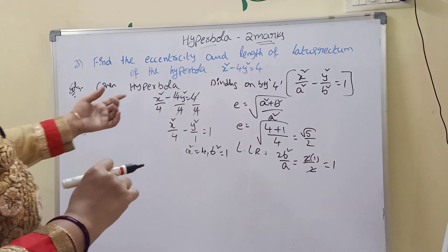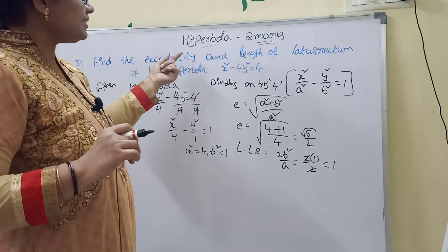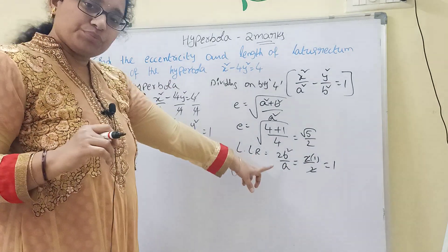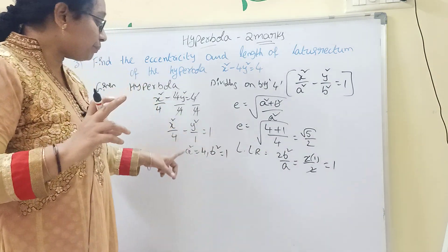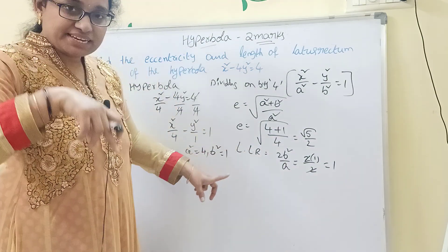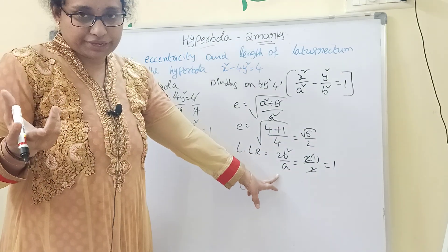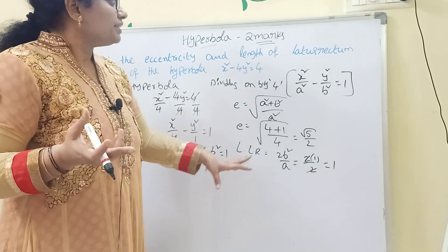For any hyperbola given, convert to general form and find eccentricity and length of latus rectum. The formula is 2b²/a when a is greater than b. If a is less than b, the formula becomes 2a²/b. Use the appropriate formula accordingly.